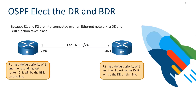In the two-way state, we talk about an election for DR and BDR roles. This election only occurs on multi-access networks such as Ethernet. Our routers have a default priority of 1 on their links, and because both priorities default to 1, it's a tie. The tiebreaker goes to the highest router ID. R2 has 172.16.5.2, giving it the higher router ID, so R2 becomes the designated router. R1, with the lower IP address 172.16.5.1, becomes the backup designated router, or BDR.